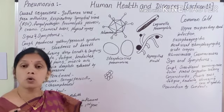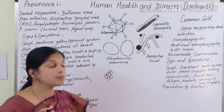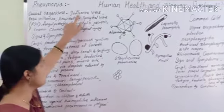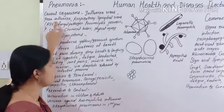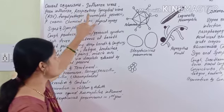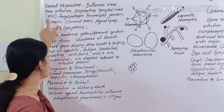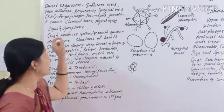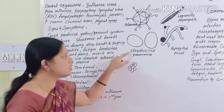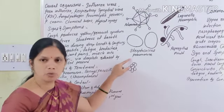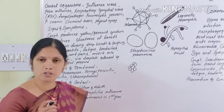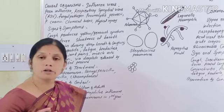What are the different causal organisms of pneumonia? The influenza virus, adenovirus, and respiratory syncytial virus (RSV) are viral causes. Bacterially, Streptococcus pneumoniae is specifically responsible for causing pneumonia.